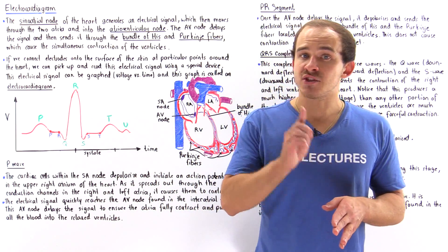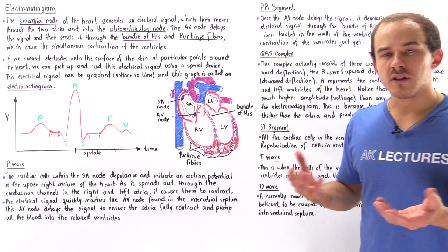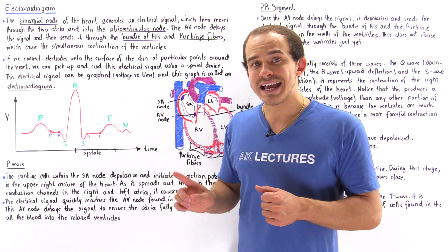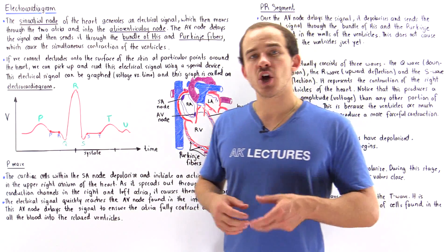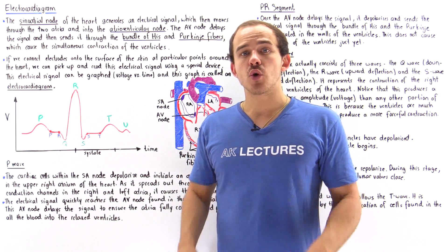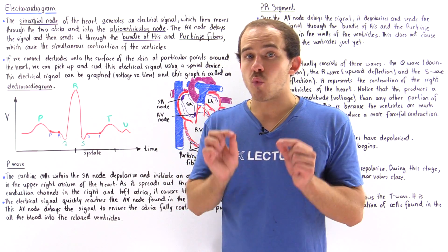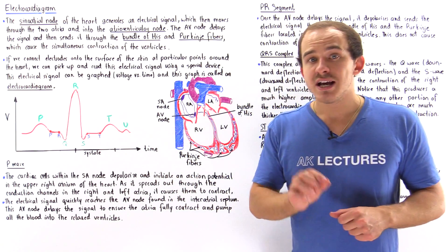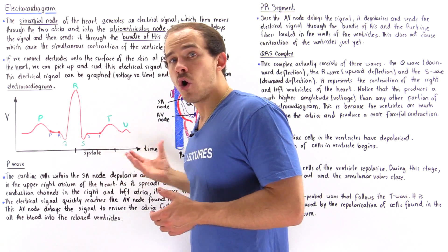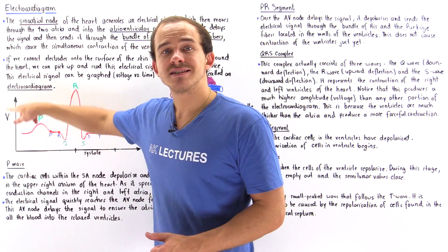An electrocardiogram is a graph that describes the electrical signal generated by the heart. To obtain it, we take special electrodes and connect them onto the surface of the skin at special locations on the body. Six electrodes are usually placed around the heart, two on the arms and two on the legs, creating a closed electric circuit. A device reads the electrical signal and produces an XY graph where the X axis is time and the Y axis is voltage.